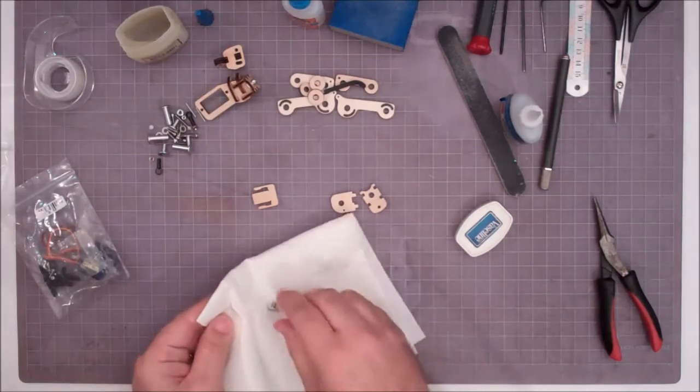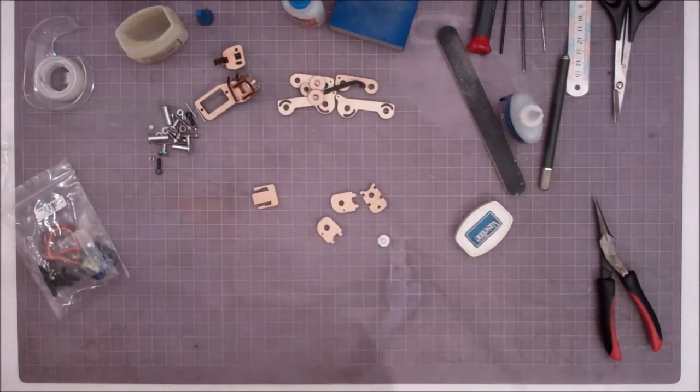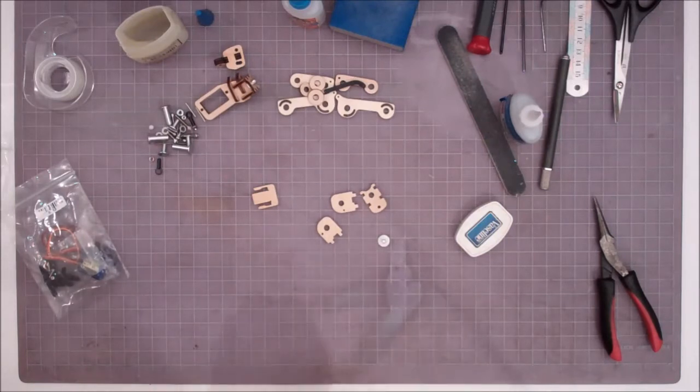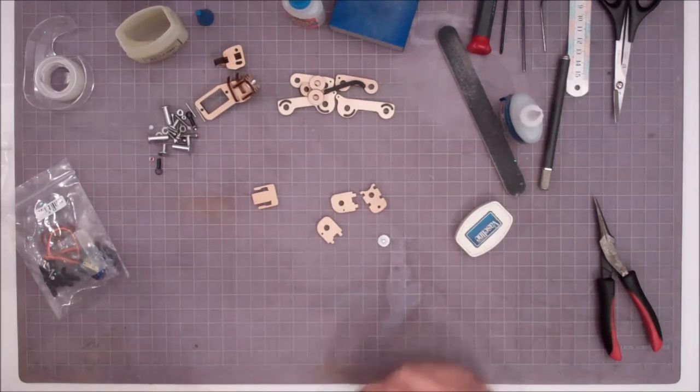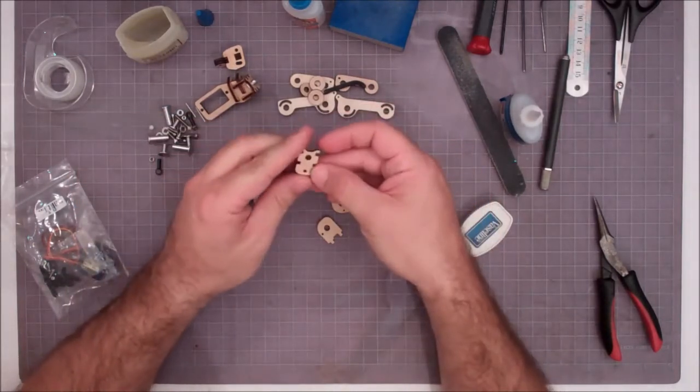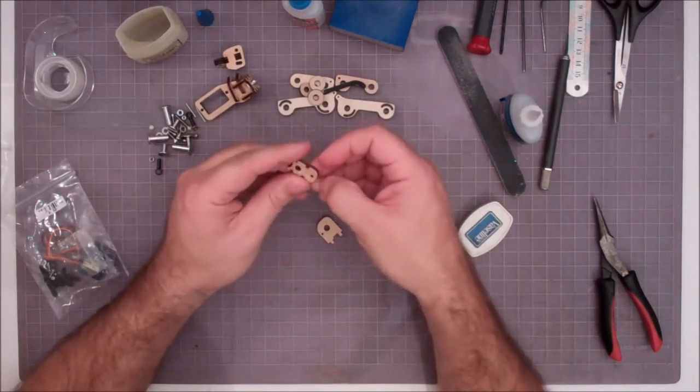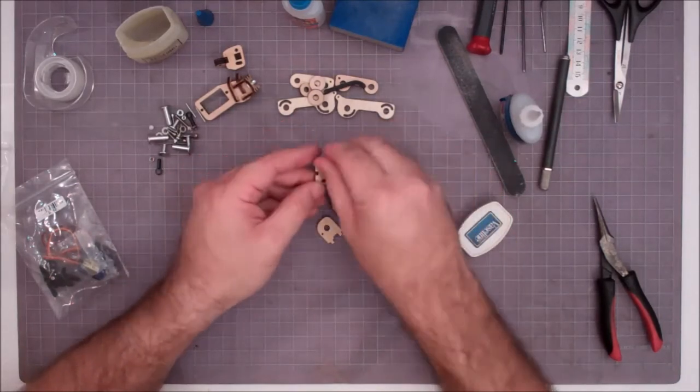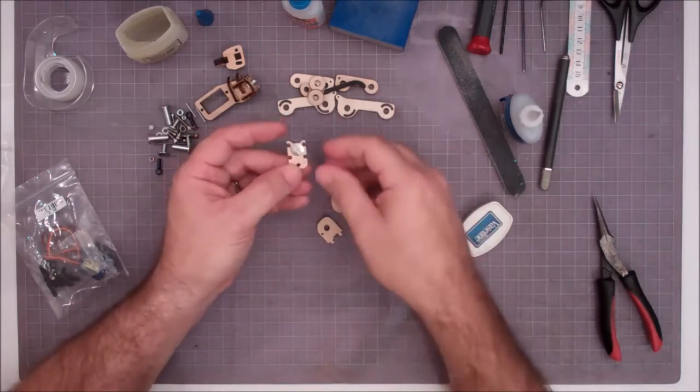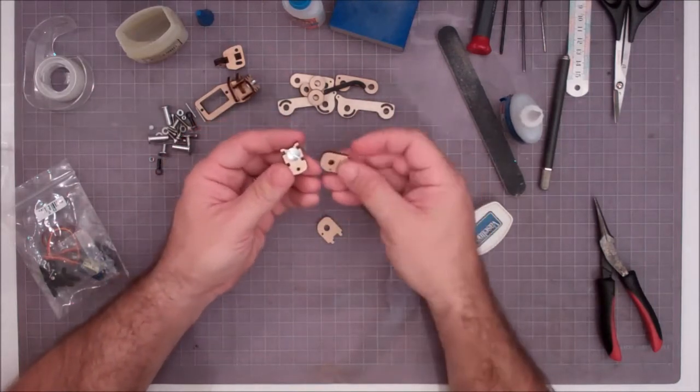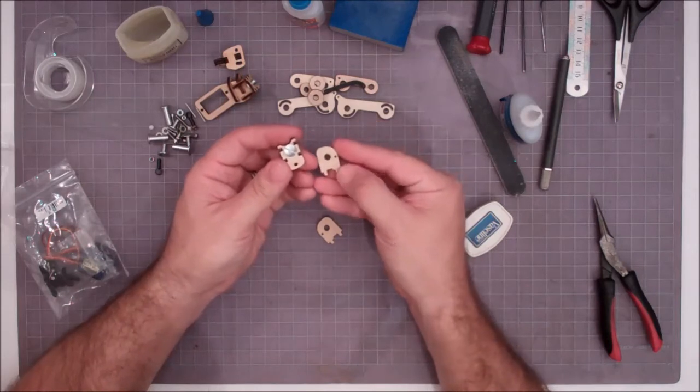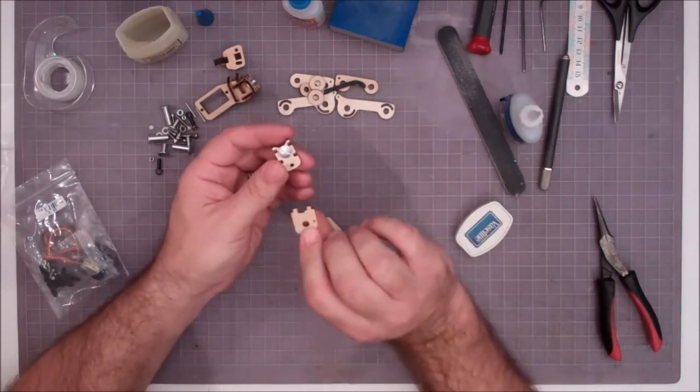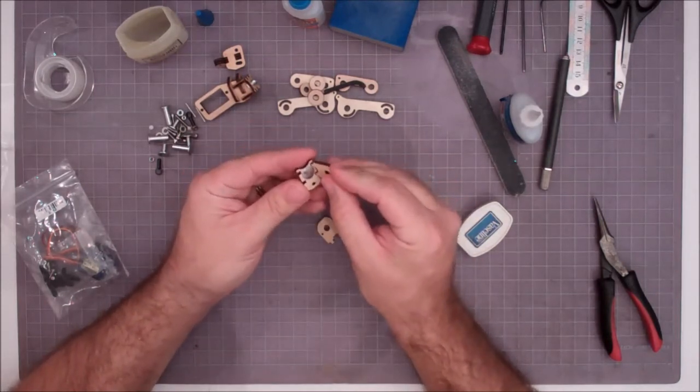Then just dab it off so we don't have too much. Get our fingers wiped down really well because you do not want to be getting Vaseline all over your parts as you assemble because it will cause your glue not to stick well. We're gonna go ahead and assemble this part. Looking at the clean side versus the not so clean side, we're gonna drop the screw in from the not so clean side. Then looking at our little tabs, the clean side facing the outside of our part.